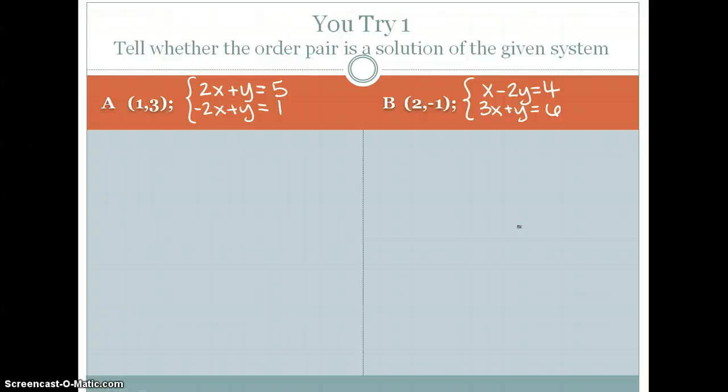So here's a couple of examples. Tell whether the ordered pair is a solution of the given system. So these are for you to try. So we have (1, 3) to the system 2x plus y is equal to 5 and negative 2x plus y is equal to 1.